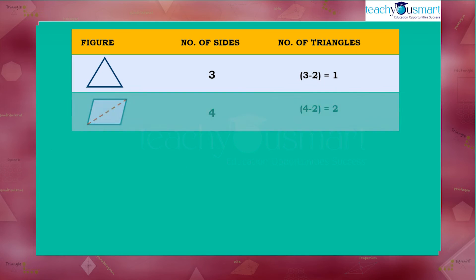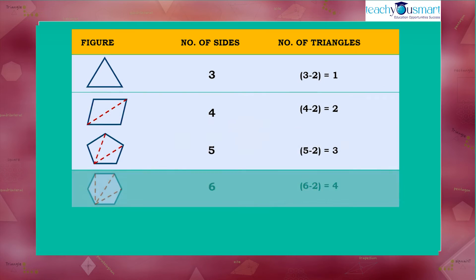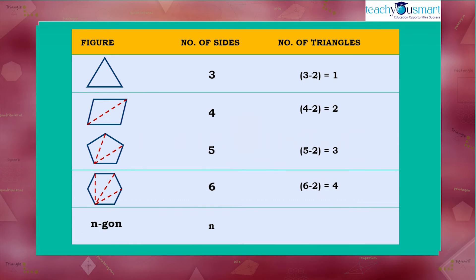Likewise, if we consider an n-sided polygon called the n-gon, the number of triangles that can be formed is n minus 2.